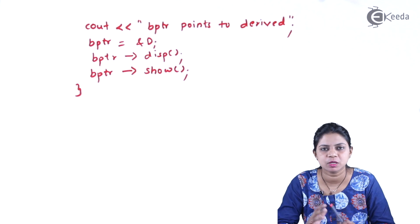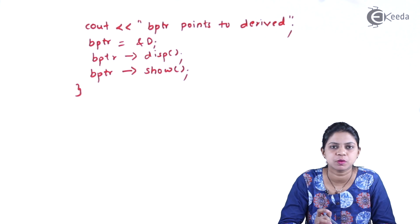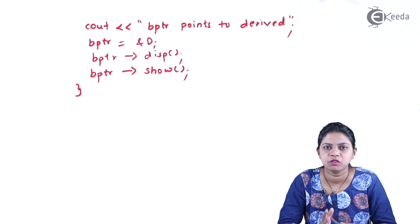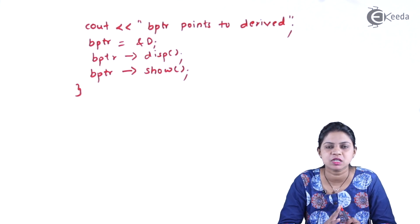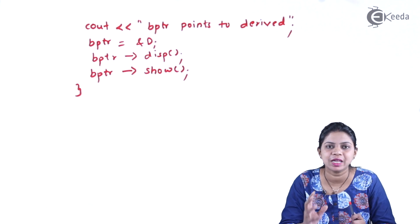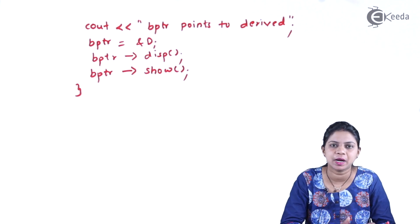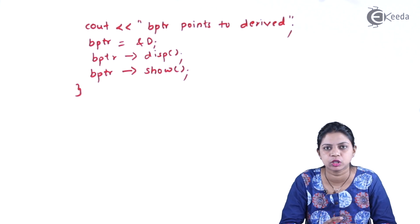This example covers virtual functions and the two types of polymorphism: compile time and runtime. This question is very important from an exam perspective, as it typically comes for three or four marks. If it comes for four marks, explanation along with a program is needed. If it comes for three marks, explanation along with an example is needed.